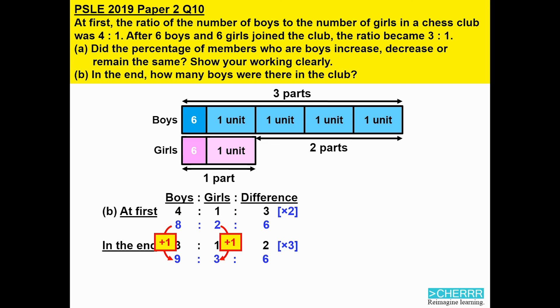We can therefore say 1 unit represents 6. Since the question asks for the number of boys in the end, there are 9 units, so 6 times 9 gives us 54. There are 54 boys in the club in the end.